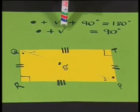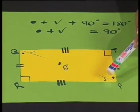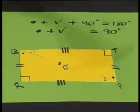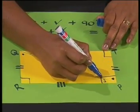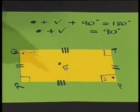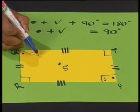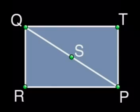So, if we look here, we know the dot plus the tick is equal to 90 degrees. At angle P, we have the dot plus the tick, which means angle P is 90 degrees. And if you look at Q, we also have a dot plus the tick, which means angle Q is also 90 degrees. So this shape is definitely a rectangle.